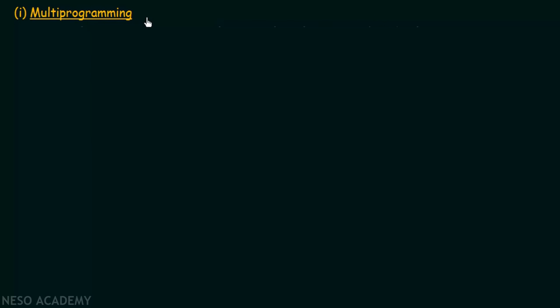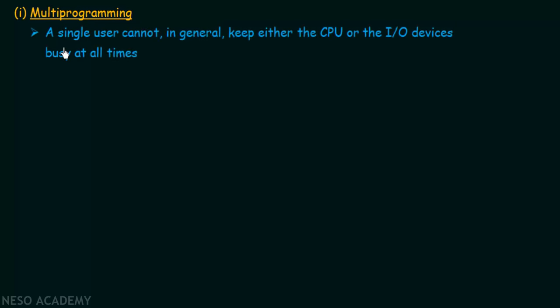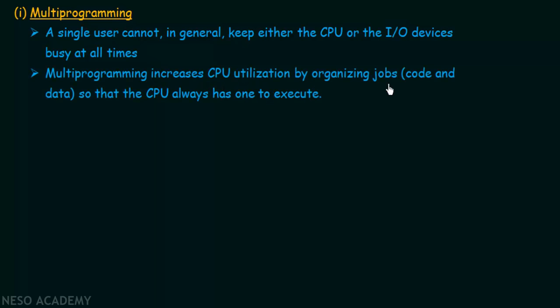Multiprogramming means the capability of running multiple programs by the CPU. A single user cannot in general keep either the CPU or the IO devices busy at all times. Without multiprogramming, a single user's task would occupy the CPU until completion, meaning no other users can use the CPU or IO devices. In multiprogramming, CPU utilization is increased by organizing jobs — which are codes and data — so that the CPU always has one job to execute.